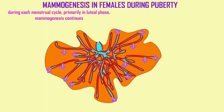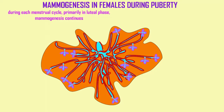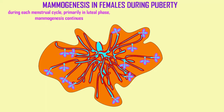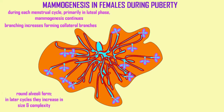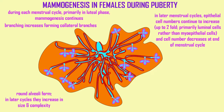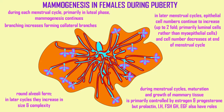In humans, during each menstrual cycle, primarily in the second half — in the luteal phase — mammogenesis continues. This includes the branching of the ducts of the mammary glands, forming collateral branches, and the conversion of the terminal epithelial buds into round alveoli, which in later menstrual cycles increase in size and complexity. Even after the mammary gland is primarily established, later menstrual cycles will continue to give these cells progesterone and estrogen, which cause cells to divide and can cause epithelial cell numbers to increase up to twofold, primarily the luminal cells rather than the myoepithelial cells. At the end of the menstrual cycle, the cell number decreases.